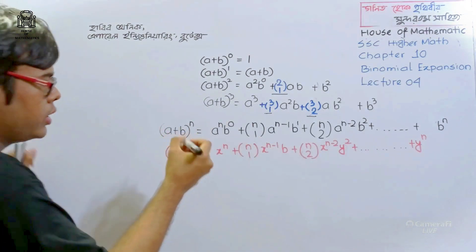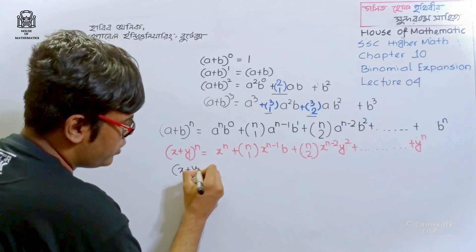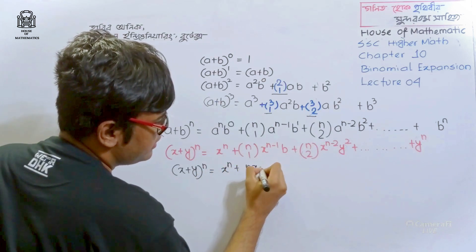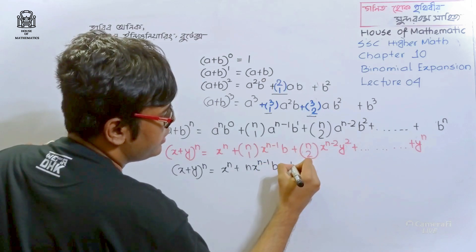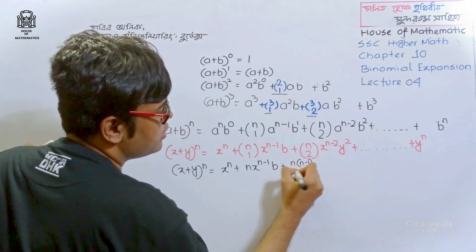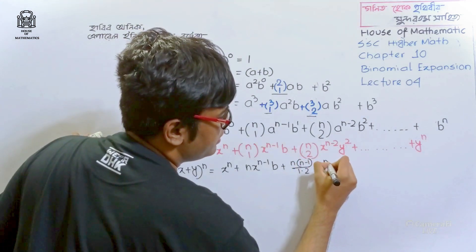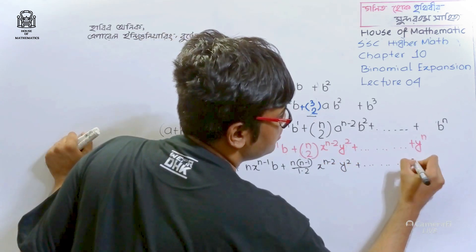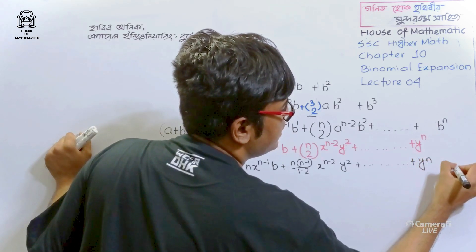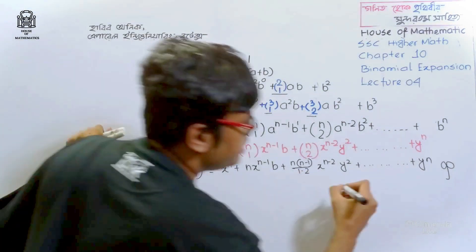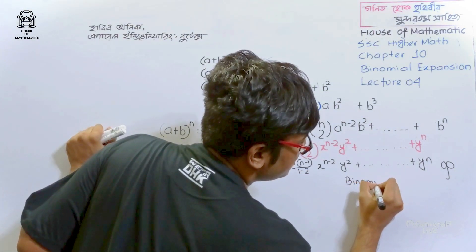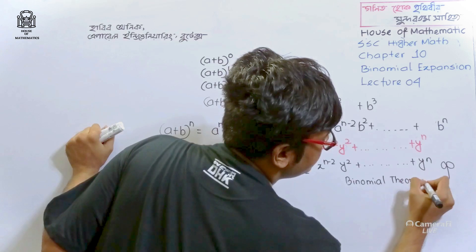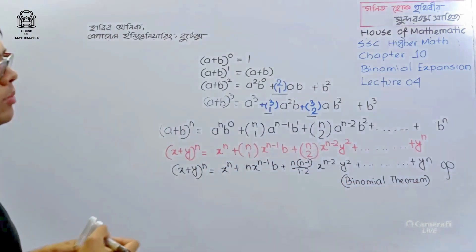The binomial expansion gives us: (x + y)^n = x^n + n·x^(n-1)·y + [n(n-1)/1·2]·x^(n-2)·y² + ... + y^n.